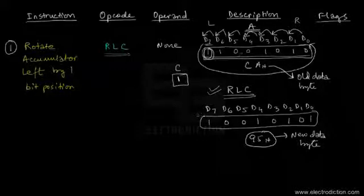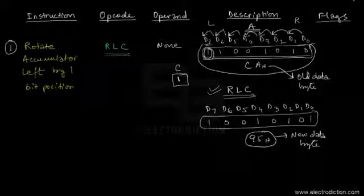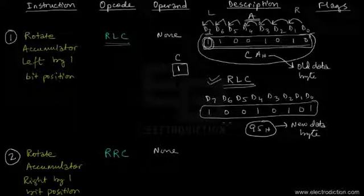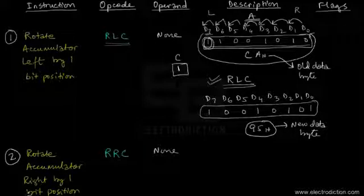The RLC instruction transfers bits by one bit position towards the left. There's another instruction known as RRC which shifts or rotates accumulator bits towards the right by one bit position, as it says — it just rotates the bits in the accumulator right by one bit position.